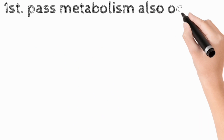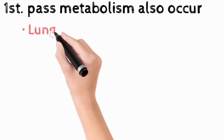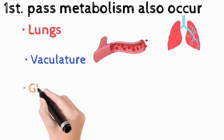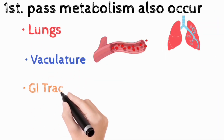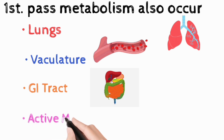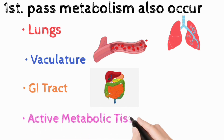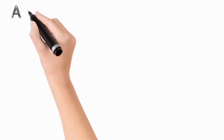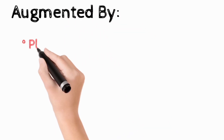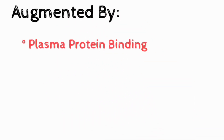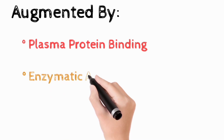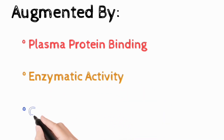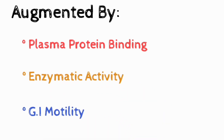However, the first pass effect can also occur in the lungs, vasculature, gastrointestinal tract, and other metabolically active tissues in the body. This effect can be influenced by various factors such as plasma protein concentration, enzymatic activity in the liver, and gastrointestinal motility.